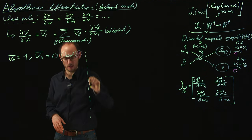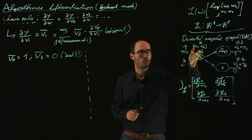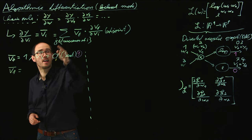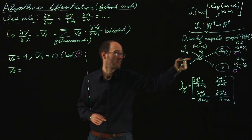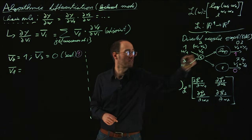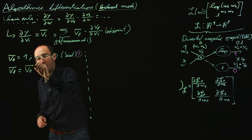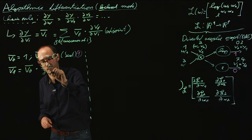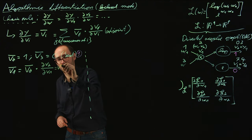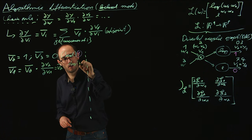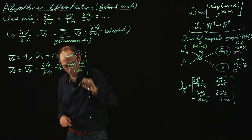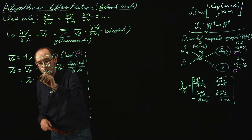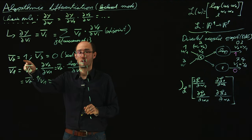Now let's apply the chain rule in backward fashion. Starting from v2 and going backward, the next adjoint to calculate is v1. So v1 bar is identical to the sum over its successors — the only successor of v1 — times the actual derivative of v1. That is v2 bar times the partial derivative of v2 with respect to v1, which is v2 bar times the partial derivative of log(v1) with respect to v1. This becomes v2 bar times 1 over v1. And v2 bar was part of our seeding, which is 1.